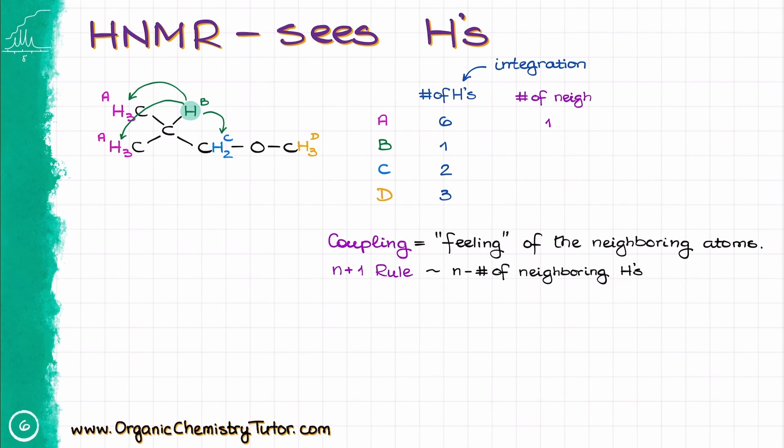so the total number of neighbors that we are going to have for group B is going to be 8. Group C then can only see the hydrogen B, meaning that we only have one neighbor for that group, and finally group D has no neighbors.